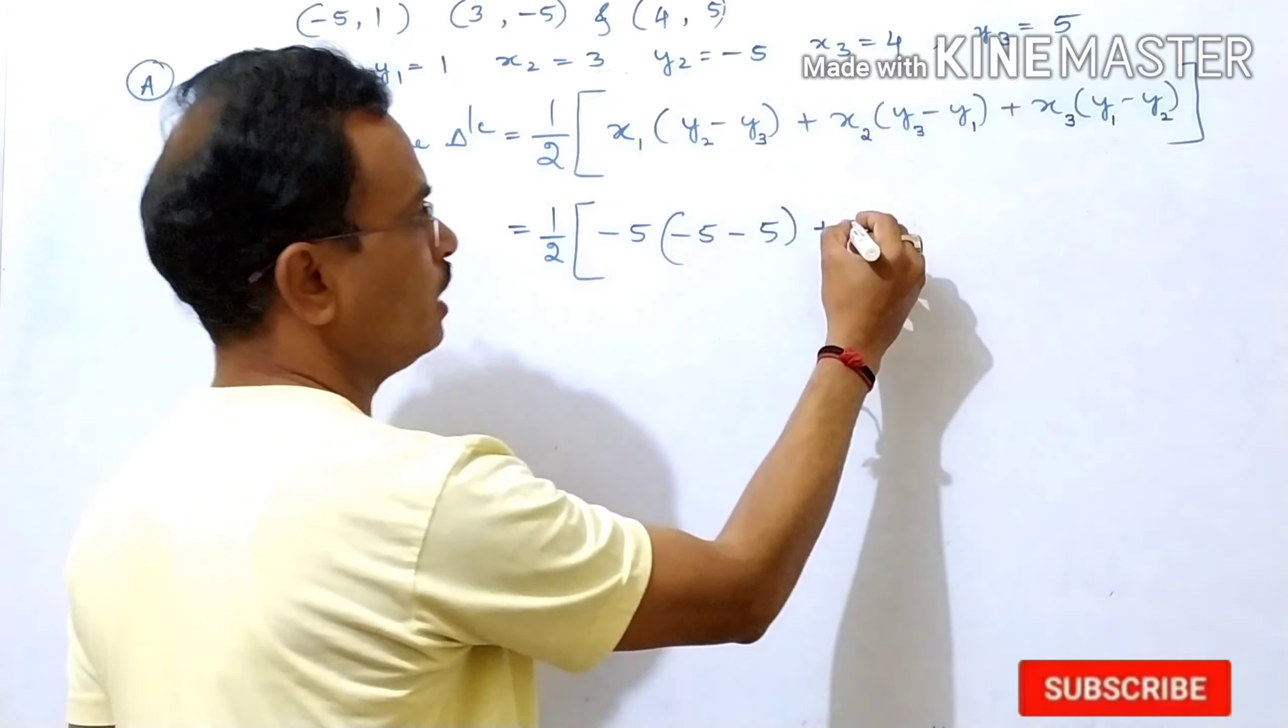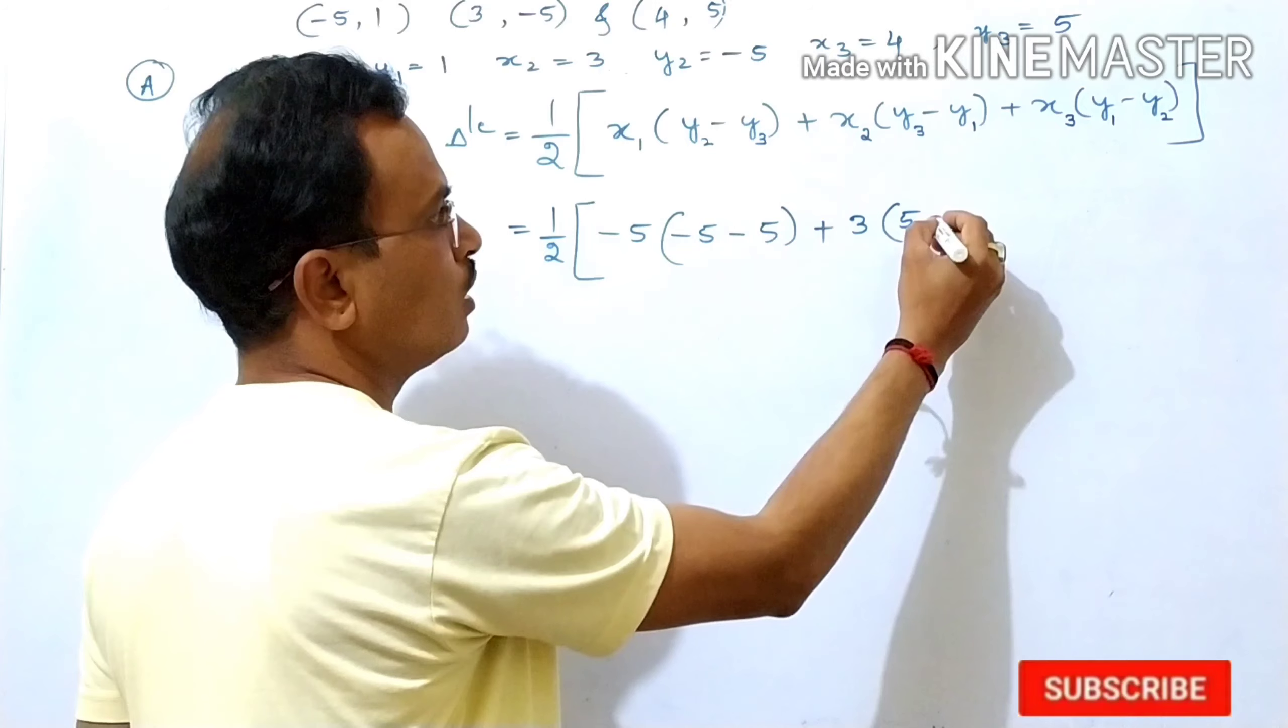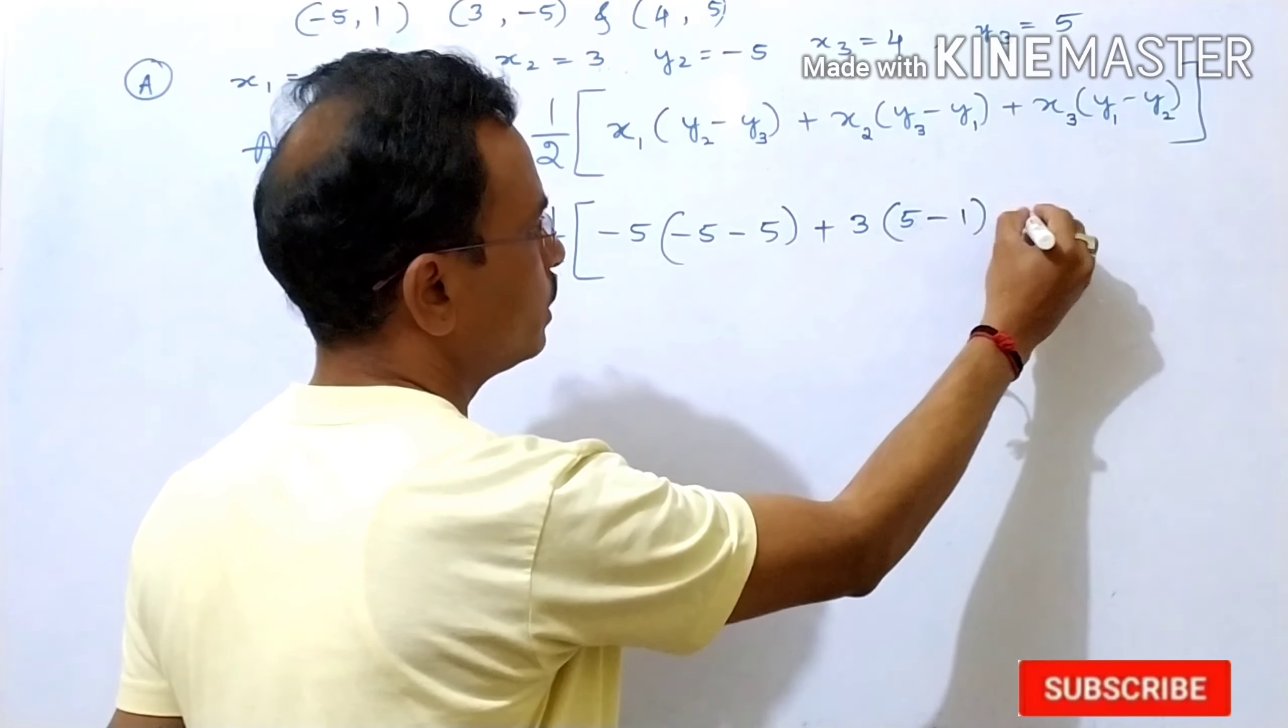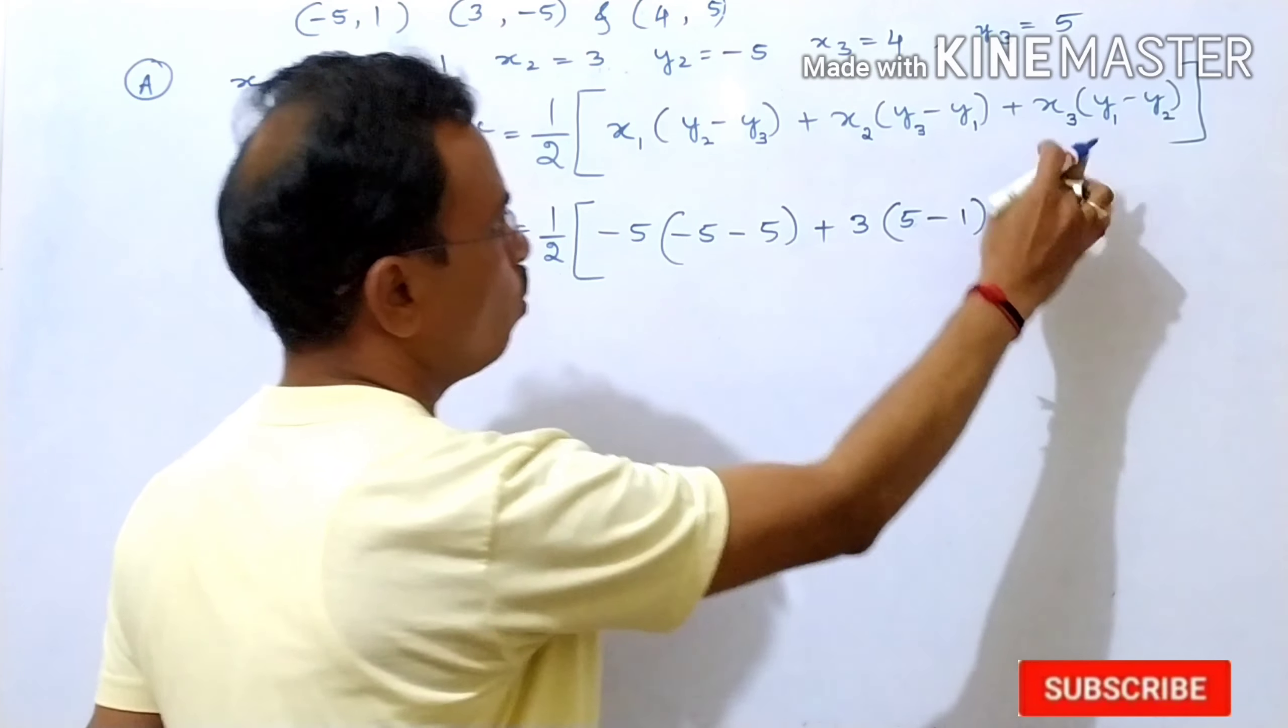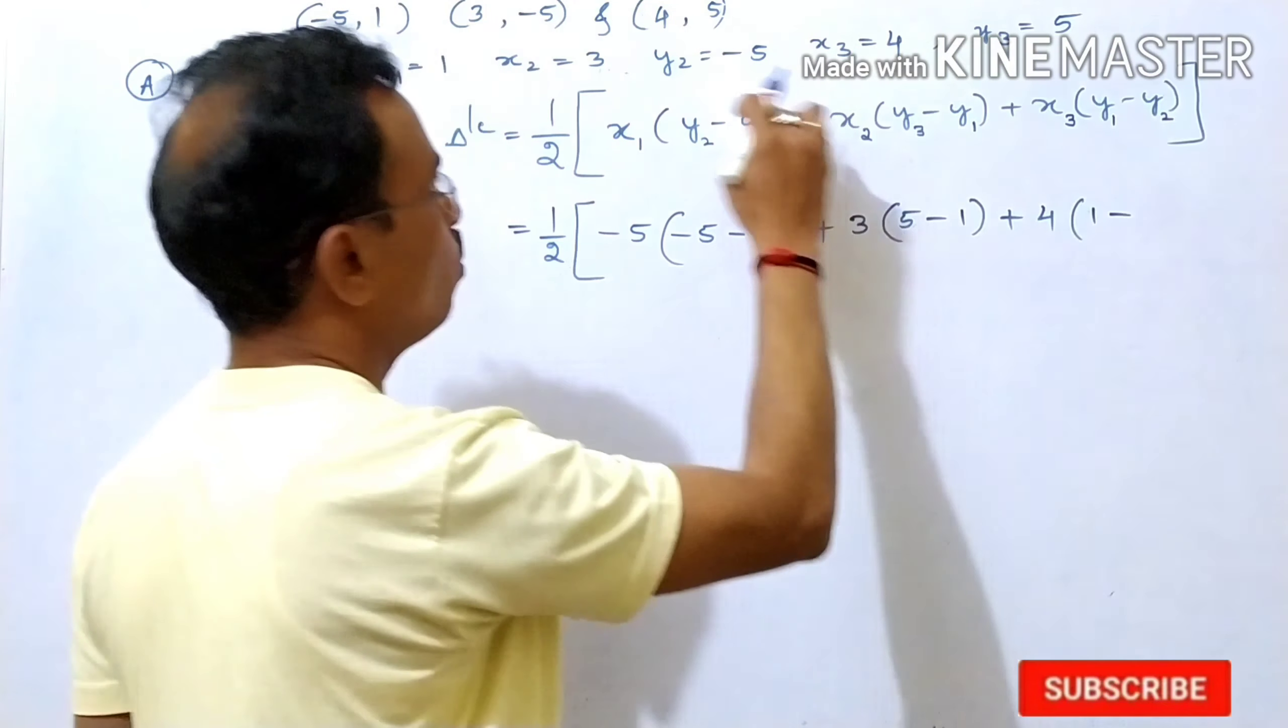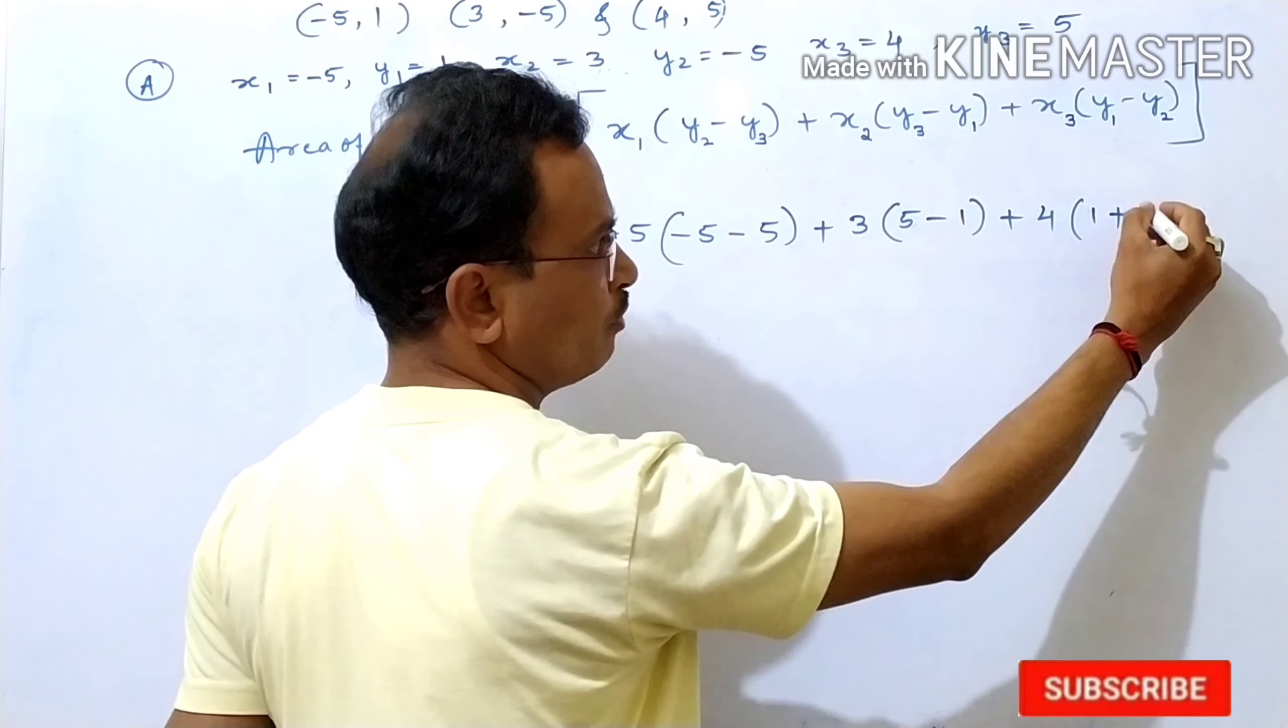x2 is here 3, y3 is 5, then minus y1, y1 is 1, then plus x3 is 4, y1 is 1, minus y2 is minus 5. Minus into minus it become plus, then 5.